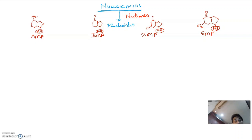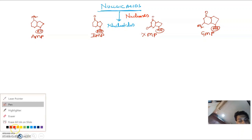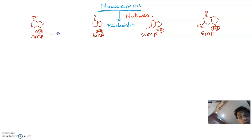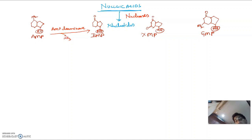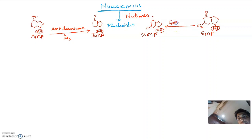These were the basic structures. Now AMP undergoes deamination in the presence of AMP deaminase to form IMP. Similarly, GMP can undergo a deamination reaction to form XMP.